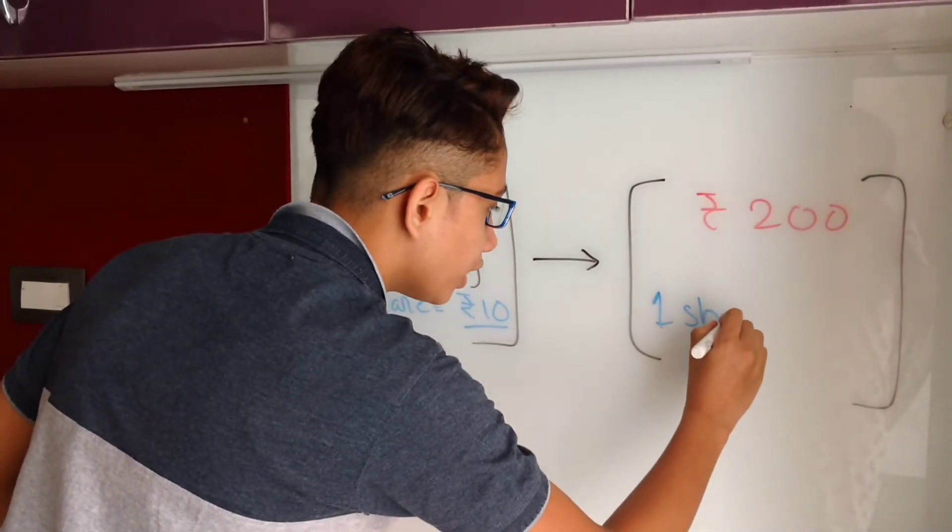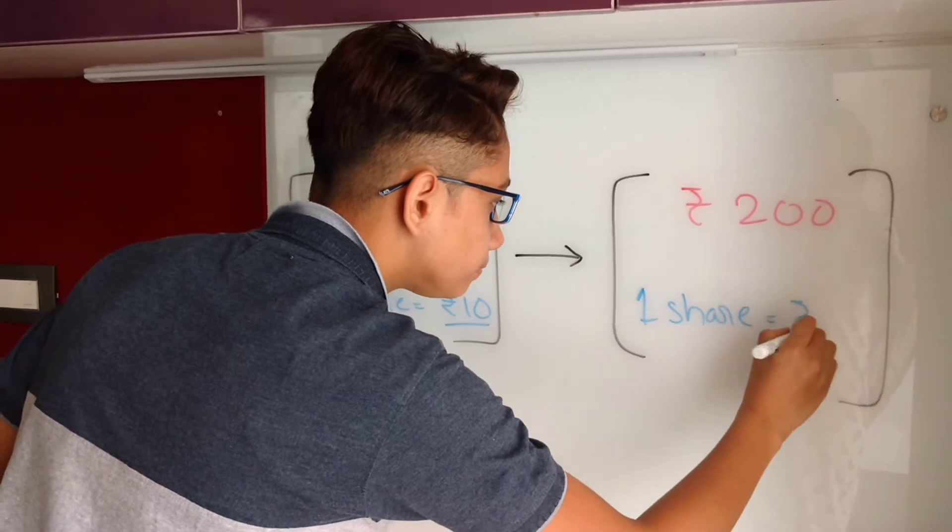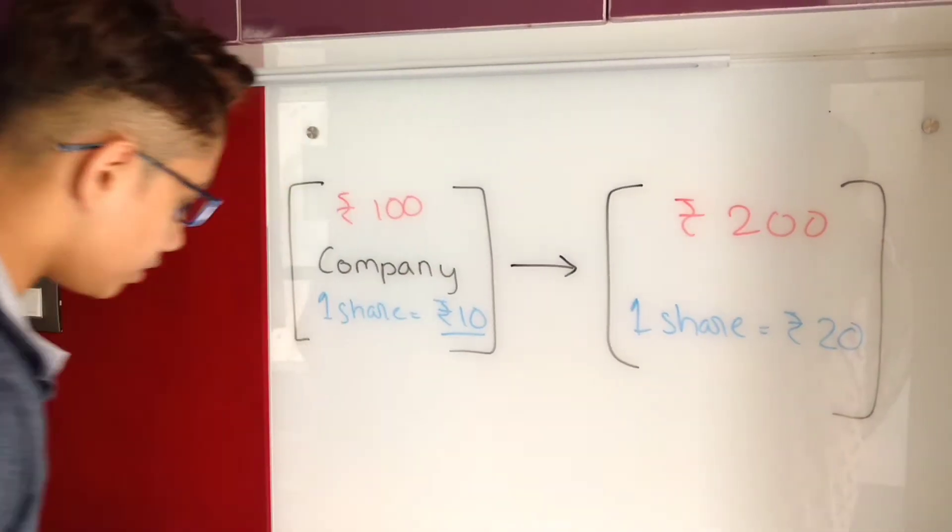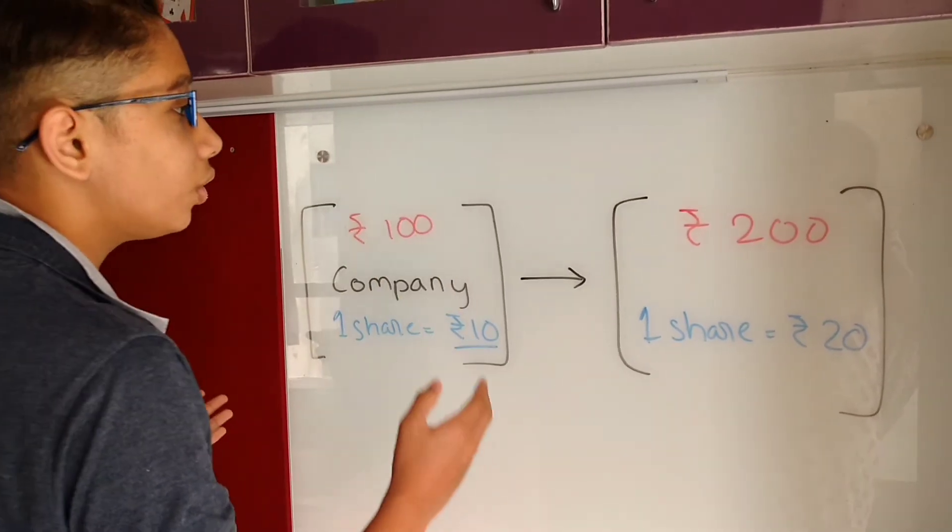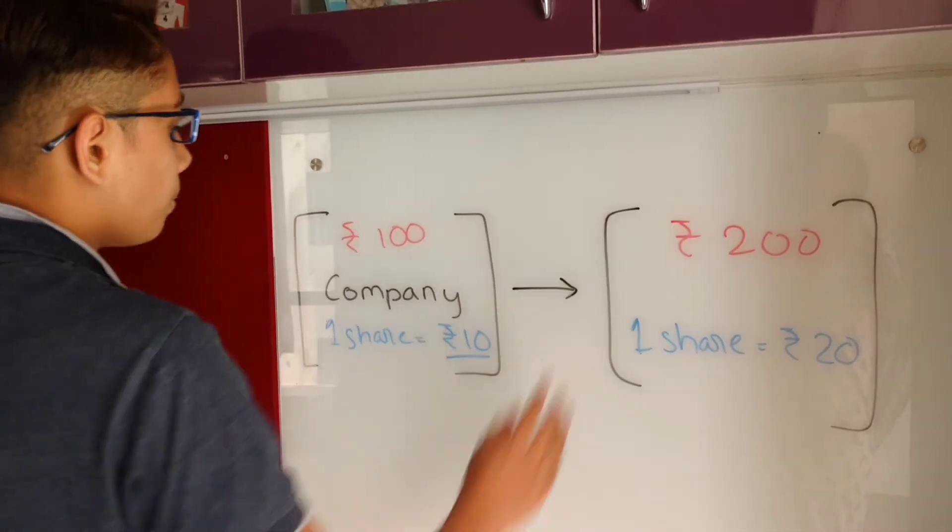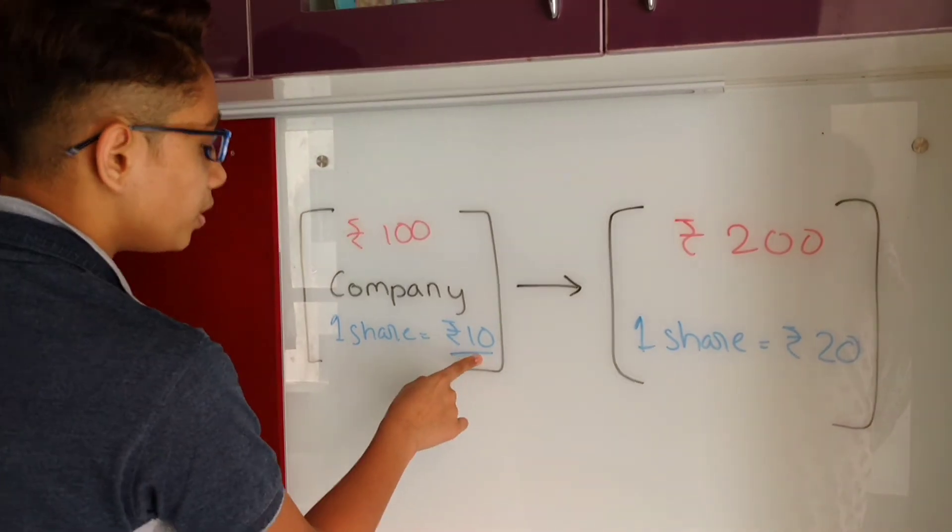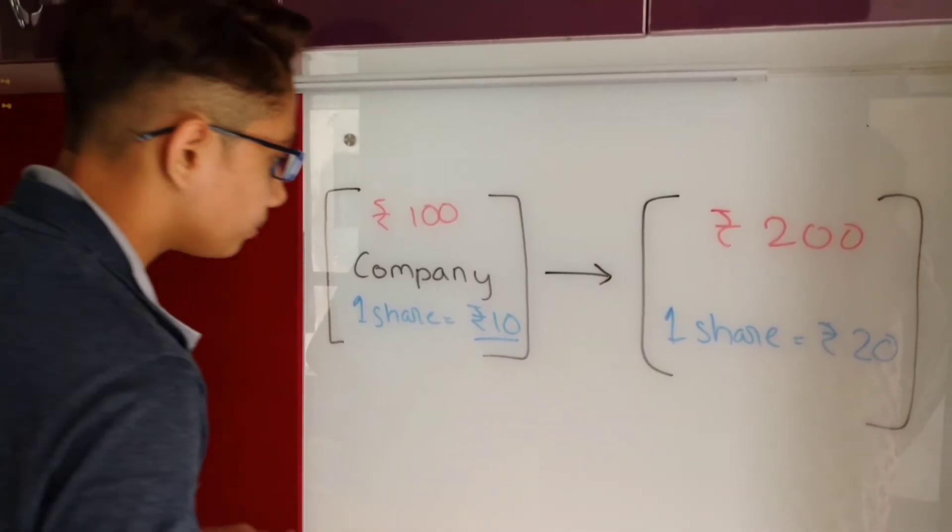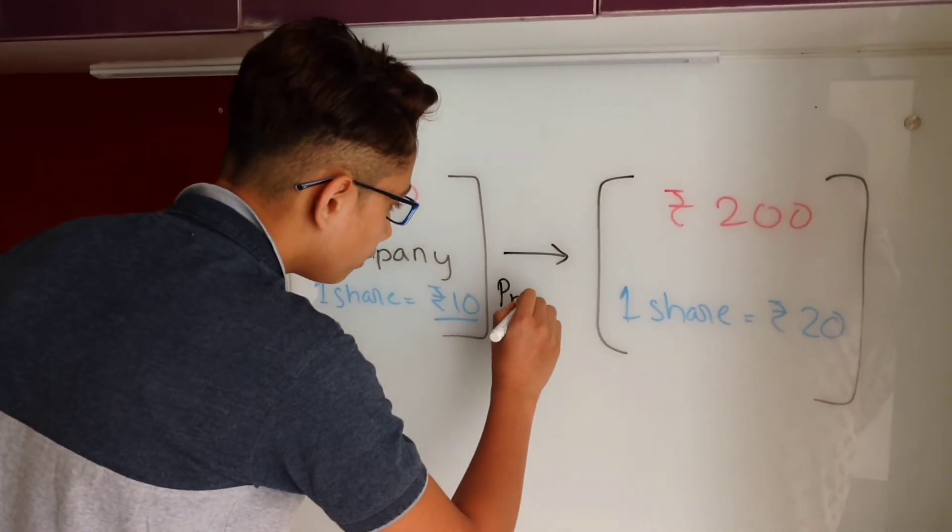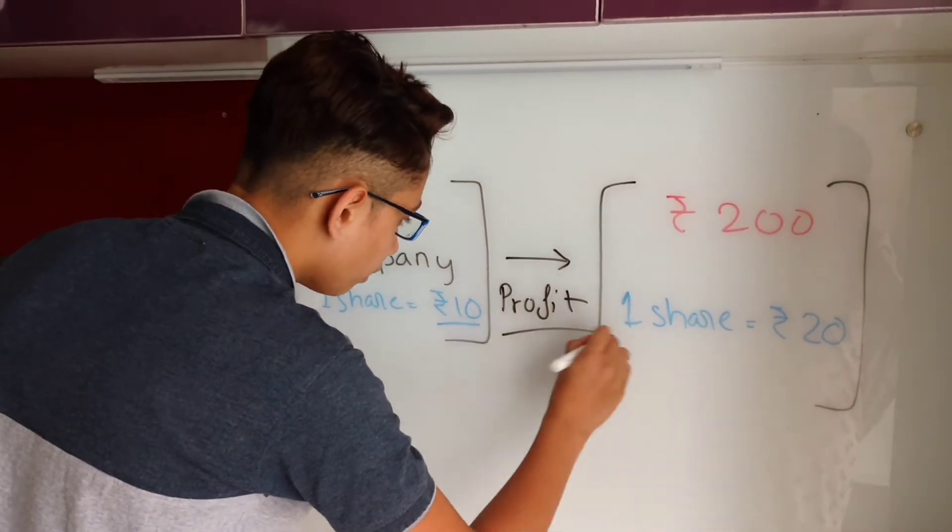Which means that one share will now be 20 rupees. So if I invested in your company at this point of time and sold my share at this point of time, I would not get 10 rupees but I would get double of that, which is 20 rupees. And that is the profit in the stock market.